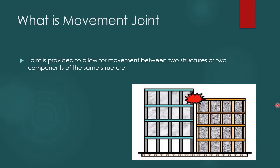What is a Movement Joint? A Movement Joint is a kind of joint we provide in structures to allow for movements. This is basically provided within two structures or two structural elements, and we will discuss about this in detail.